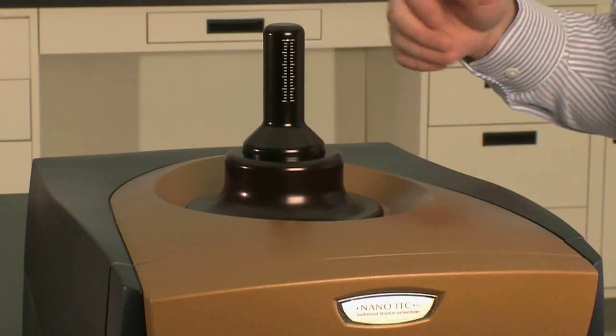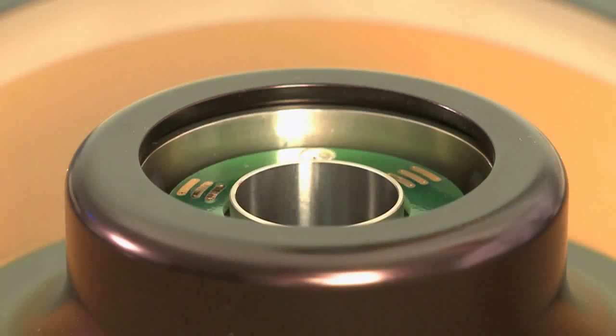In this TA Tech Tip, we're going to be filling the sample and reference cells of the nano ITC. The first step is to remove the burette handle from the ITC.